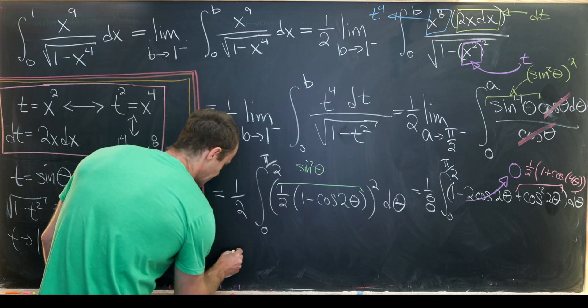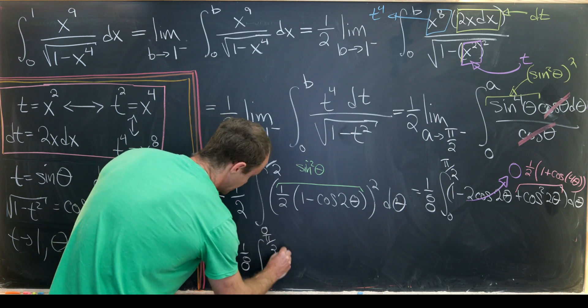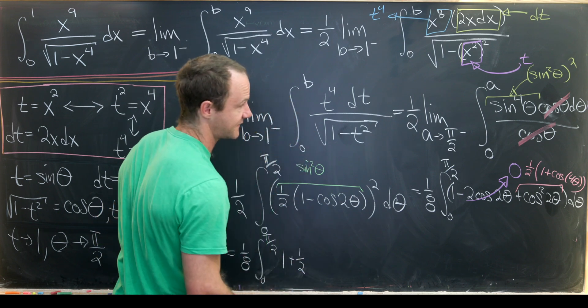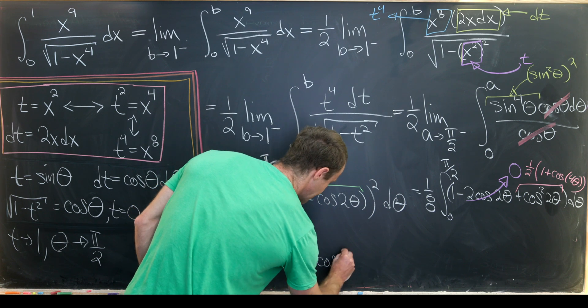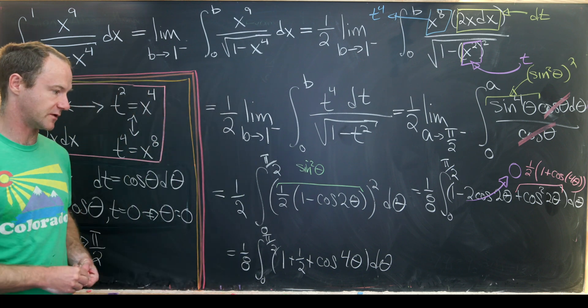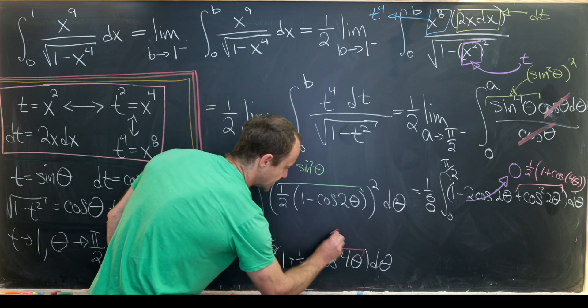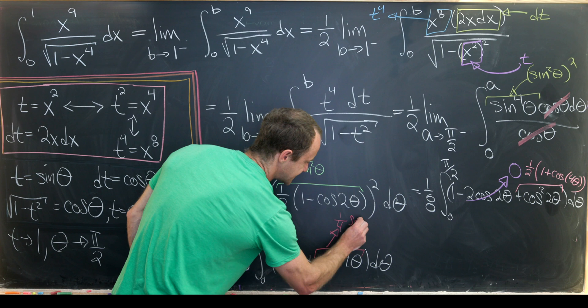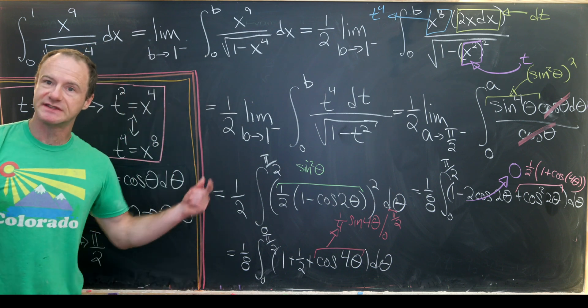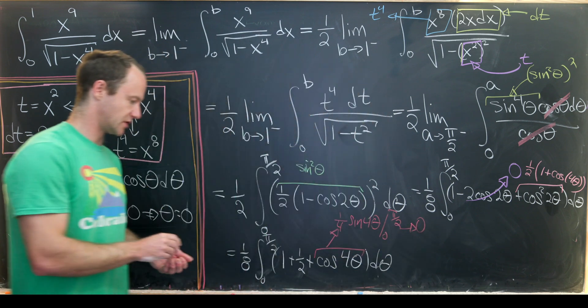We have 1/8 times the integral from 0 to π/2 of 1 + 1/2 + cos(4θ) dθ. Now we're pretty much home free. Integrating cos(4θ) gives 1/4 sin(4θ) evaluated from 0 to π/2, which equals 0. We're left with 3/2 times 1/8, which is 3/16 evaluated at π/2.